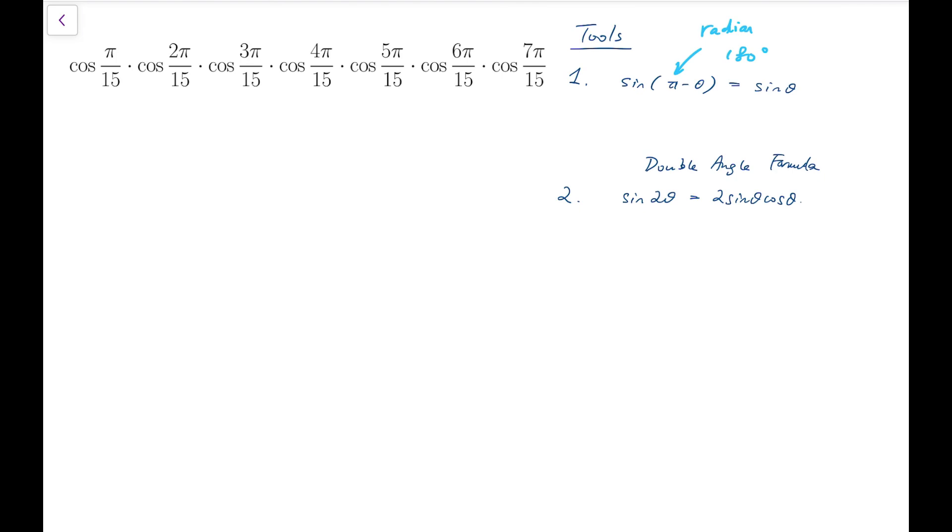These two tools can both be derived from the very well-known compound angle formula, which says that if two angles are added together, then sine of the sum can be rewritten as sine a times cos b plus cos a times sine b. That's for the addition version.